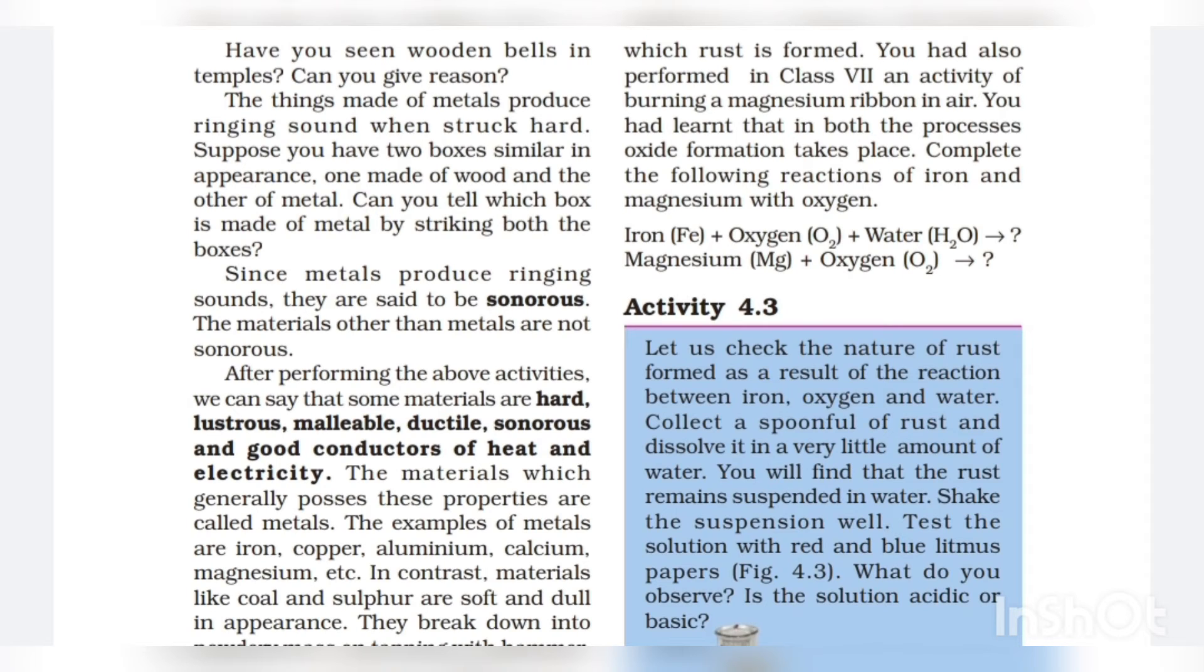Recall the reaction by which rusting of iron is formed. You had performed in Class 7th an activity of burning a magnesium ribbon in air. You had learned that in both the processes oxide formation takes place. Complete the following reactions of iron and magnesium with oxygen: iron plus oxygen plus water H2O; magnesium Mg plus O2.